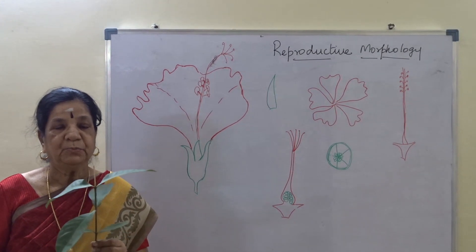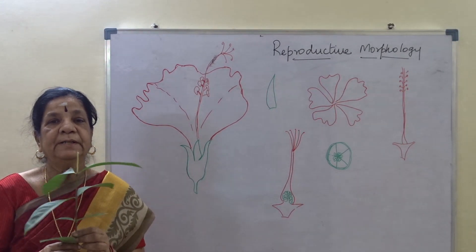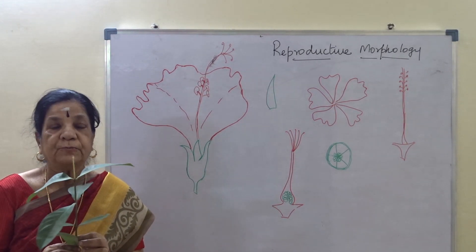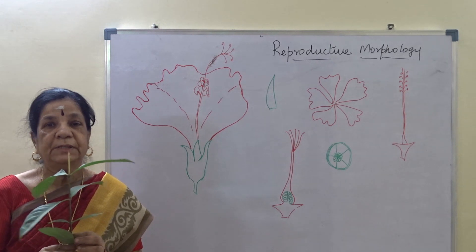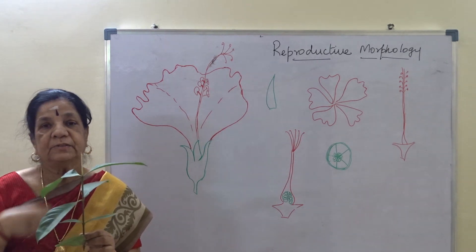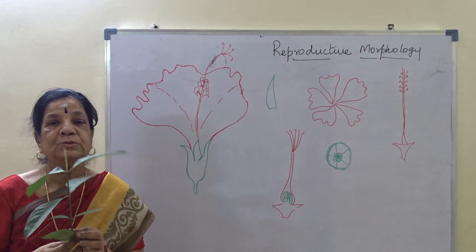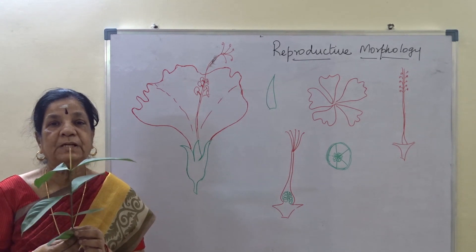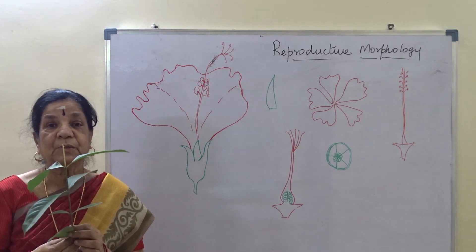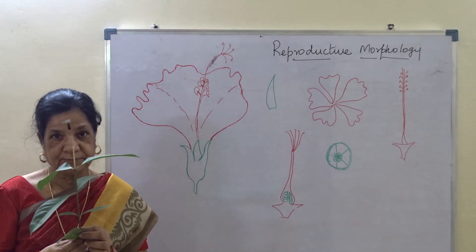In the previous session, we have been learning about the morphology of the plant. We have studied up to the root system and shoot system, and in the shoot system, about the structure of a leaf.